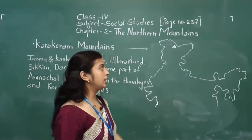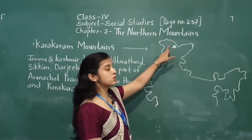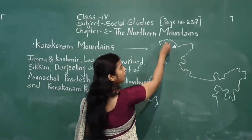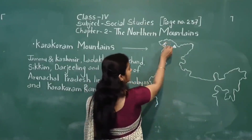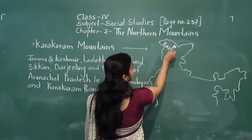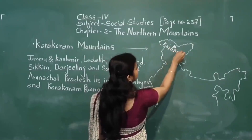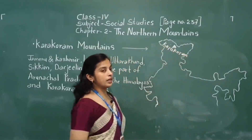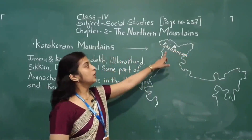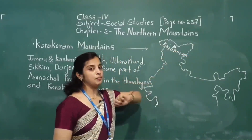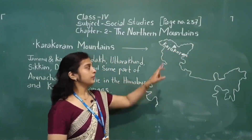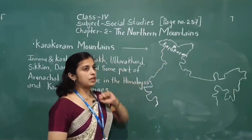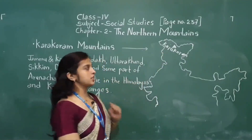They are located in the northwest of Himalaya. The Karakoram mountain range is located in the northwest of Himalaya, and the Mount Godwin-Austen K2 is also found here.